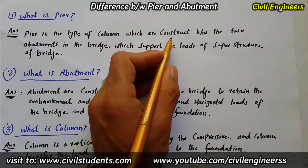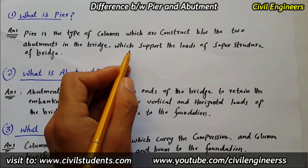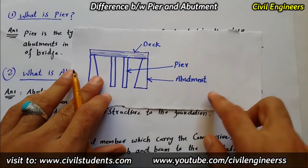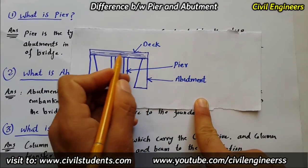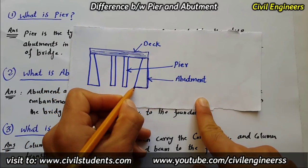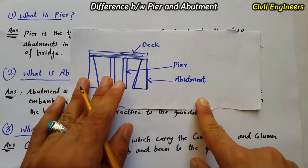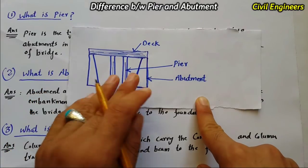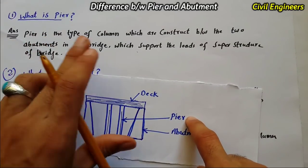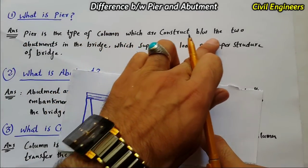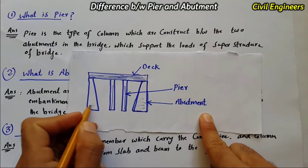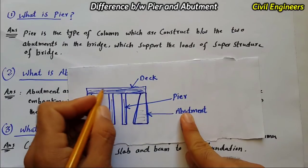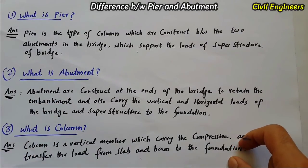A pier is a type of column which is constructed between the two abutments in a bridge, which supports the load of the superstructure of the bridge. Here is an example: this is the bridge deck, the end supports on each side are called abutments, and the pier is the internal support of the bridge. So pier is defined as a type of column constructed between the two abutments, supporting the load of the superstructure.